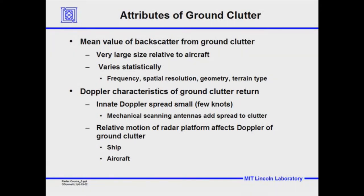The Doppler characteristics of ground clutter — you might say ground clutter doesn't move if you're on the ground. Well, trees do have some conductivity and they move back and forth with the wind. So there will be a spread to the Doppler, a spread to the radial velocity distribution when we look at the Doppler distribution of the echoes coming back from the ground. It's only a few knots.